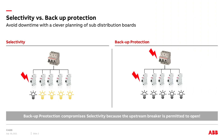Let us first clarify what selectivity and backup protection means. In easy words, selectivity means that in the case of a fault in a downstream circuit, only the closest short circuit protection device, like an MCB, will trip. The rest of the installation stays live. In electrical systems of a building, coordination is normally done to reach a high level of selectivity.